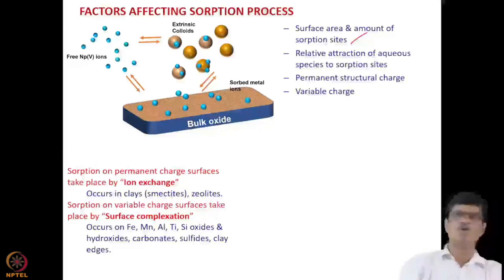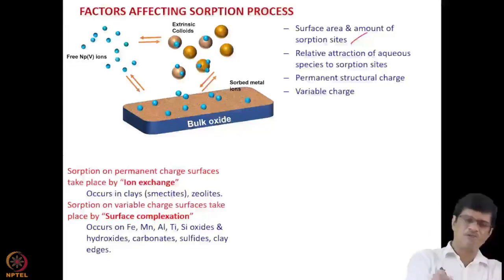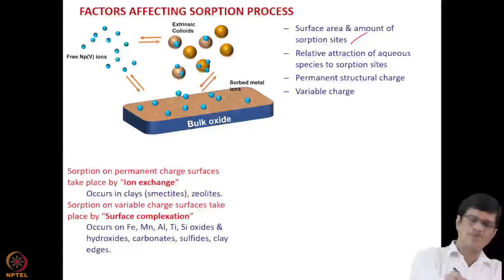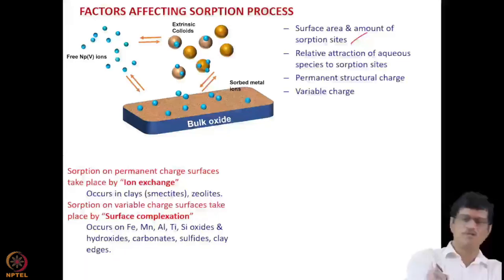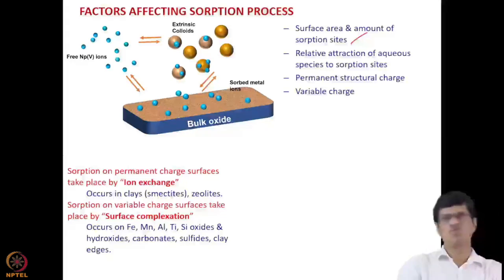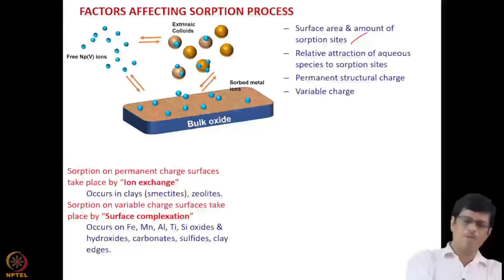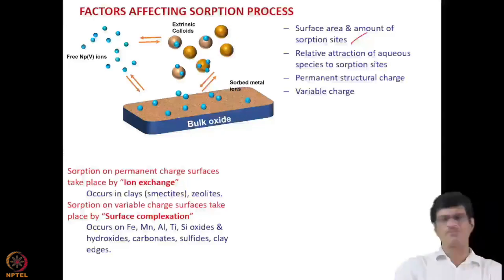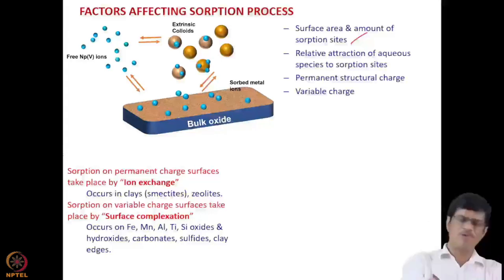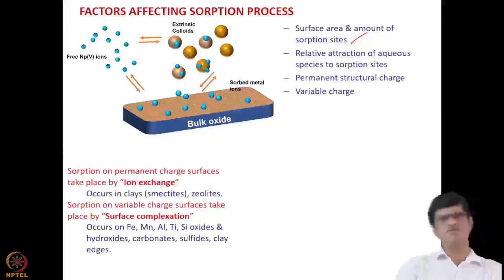This is the mineral colloid. Neptunium binding to this mineral colloid can also move — there is transport that can occur. Neptunium as such can also be transported, but the magnitude of transport will be much less for small free ions. If it is bound to a mineral colloid, the transport range will be much larger — it will travel a longer distance, or it can become bound to the bulk mineral phase, becoming immobilized.